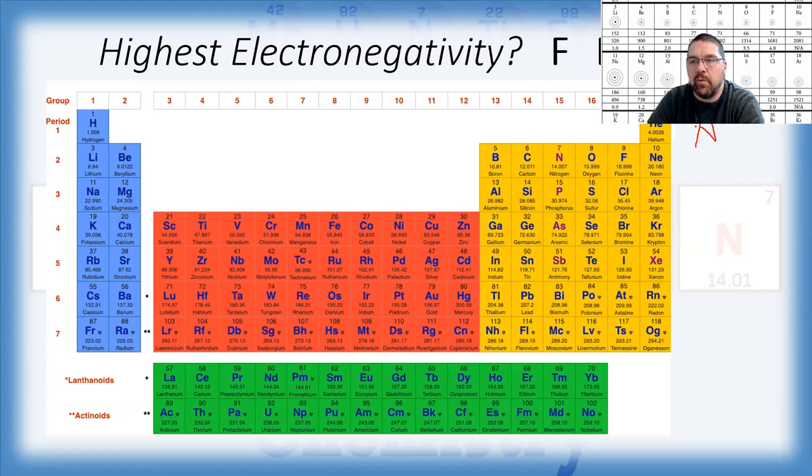Electronegativity, your high values were in the upper right-hand corner. When we compare fluorine to beryllium to oxygen, the one that's furthest up and to the right of those is fluorine.